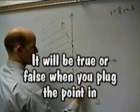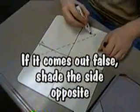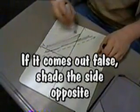It will be true or false when you plug a point in. If it comes out true, shade towards the origin. If it comes out false, shade the side opposite.